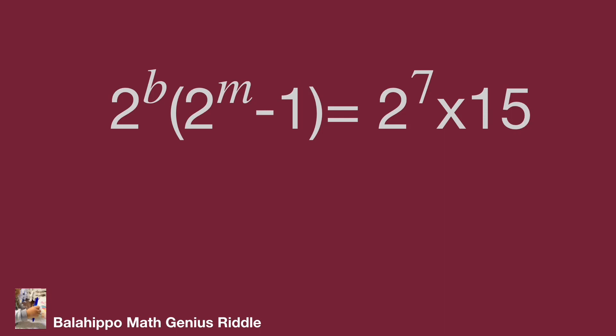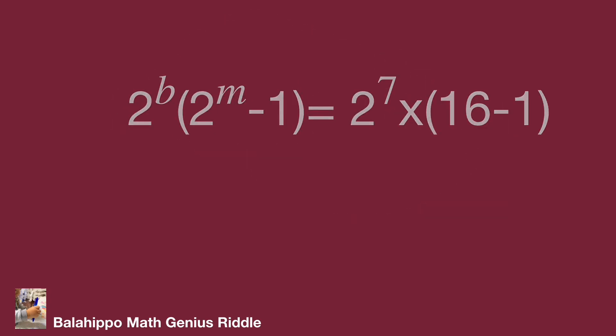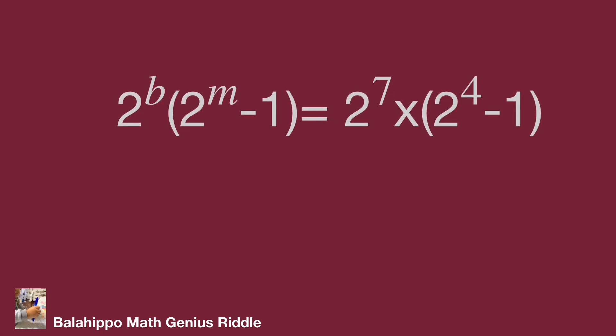Compare these two items on both sides of the equation: 2 power b versus 2 power 7, and 2 power m minus 1 versus 15. 15 equals 16 minus 1, which equals 2 power 4 minus 1. Therefore, 2 power b times bracket 2 power m minus 1 bracket equals 2 power 7 times bracket 2 power 4 minus 1 bracket. Then we get b equals 7 and m equals 4.